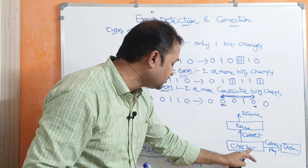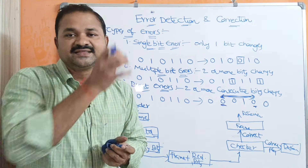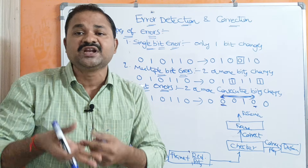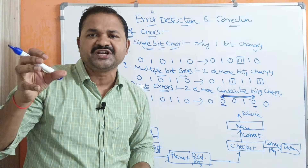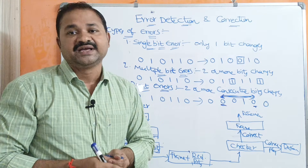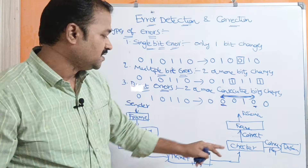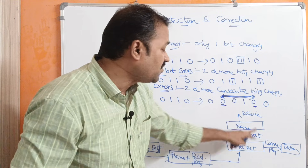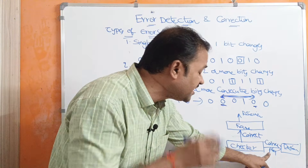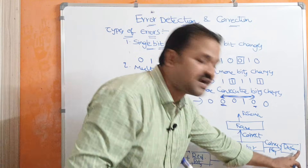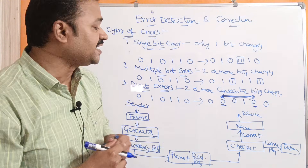At the checker side, based upon the redundant bits, the checker verifies whether the message is the original frame or a corrupted frame. The checker algorithm makes use of the redundant bits to check whether the frame is corrupted or original. If the frame is correct, it will be transmitted to the receiver. If the frame is corrupted, it will be discarded.